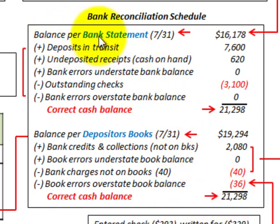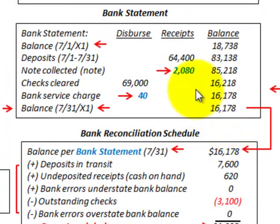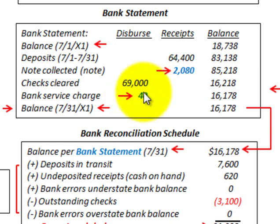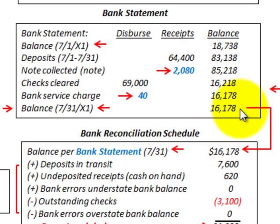Starting with the balance per the bank statement of $16,178 — this comes from the bank statement the bank issues. It shows the beginning balance on July 1, then some deposits where the bank received a loan payment from a customer on behalf of the company, then checks that cleared the bank, a bank service charge, and finally a balance at July 31 of $16,178.